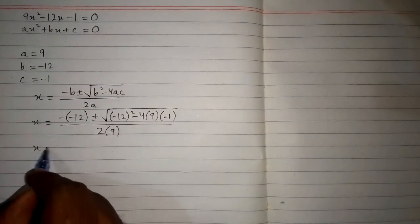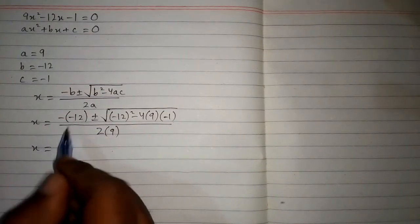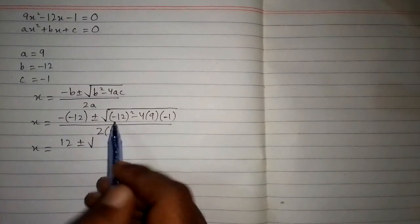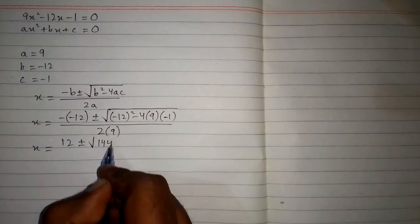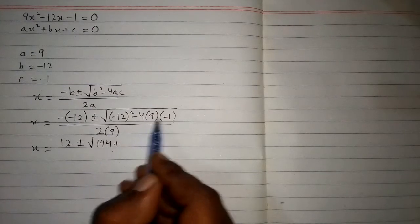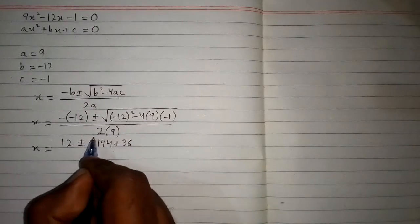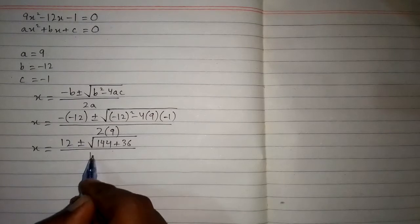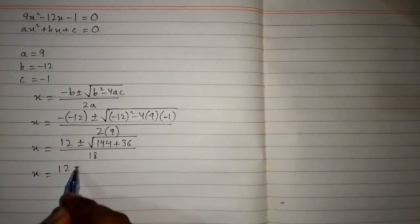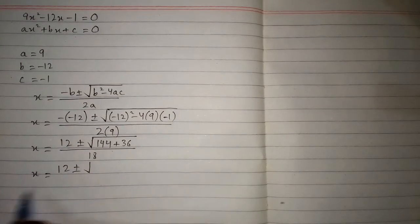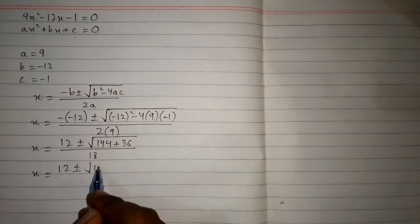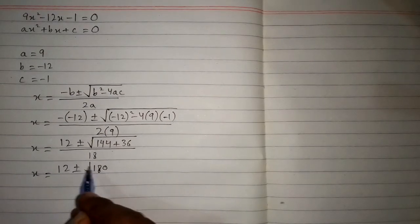Now after simplifying, minus times minus 12 is equal to 12, plus minus under root. The square of minus 12 is equal to 144, and minus 4 times 9 times minus 1 gives plus 36, upon 18. Now we will add 144 and 36, so we have 180 under the square root.